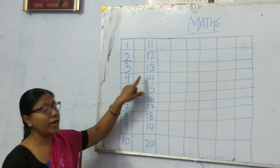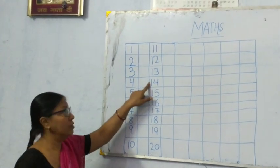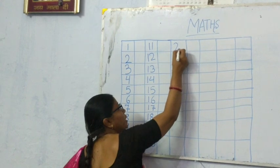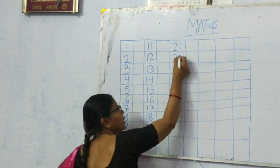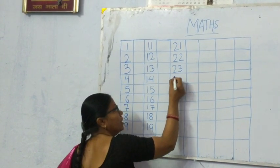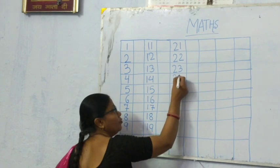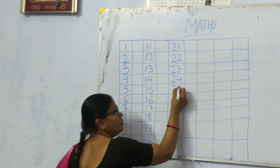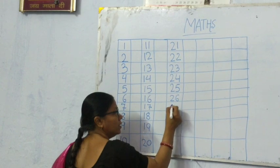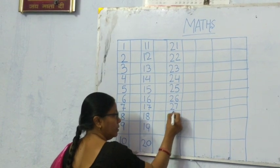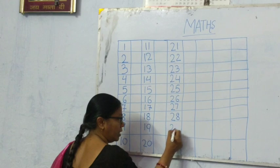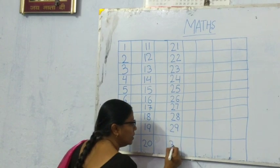Children, your writing should be clean. Okay, then again start. 21, 22, 23, 24, 25, 26, 27, 28, 29, 30.